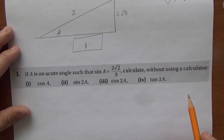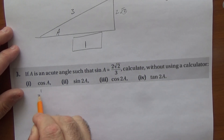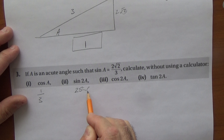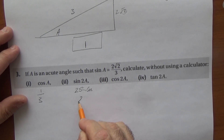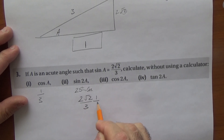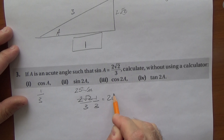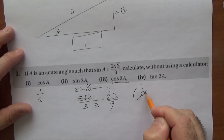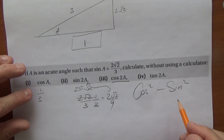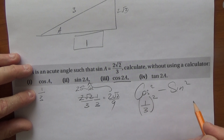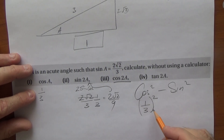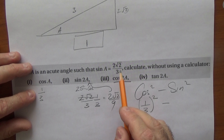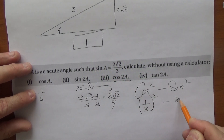Without using a calculator, find sin(2a) and cos(2a). For sin(2a) = 2·sin(a)·cos(a): sin(a) = 2√2/3 and cos(a) = 1/3, giving sin(2a) = 2 × (2√2/3) × (1/3) = 4√2/9. For cos(2a) = cos²(a) - sin²(a): (1/3)² - (2√2/3)² = 1/9 - 8/9.